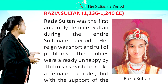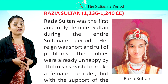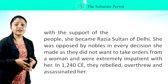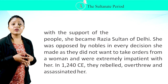Razia Sultan, 1236–1240 CE. Razia Sultan was the first and only female Sultan during the entire Sultanate period. Her reign was short and full of problems. The nobles were already unhappy with a female ruler, but with the support of the people, she became Sultan of Delhi. She was opposed by the nobles in every decision she made, as they did not want to take orders from a woman. In 1240 CE, they rebelled, overthrew, and assassinated her.